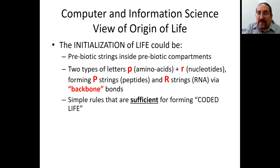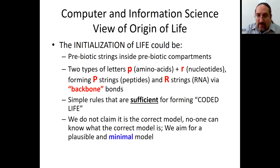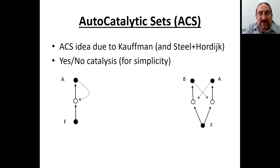There are simple rules such that three letters of R can be translated into a single letter of P, and there are also perpendicular bonds in addition to the backbone. We do not claim this is the correct model — no one can know what the correct model is — but we aim for a plausible and minimal model. This is the goal of work I started around 2013.